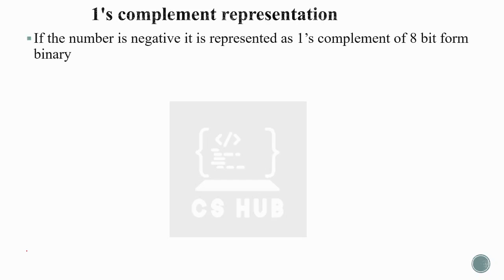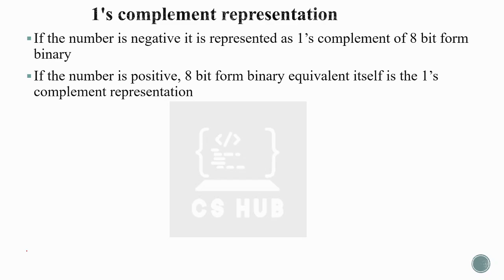If the number is negative, it is represented as the one's complement of its 8-bit binary form — that is, the 8-bit binary is inverted. If the number is positive, the 8-bit binary equivalent itself is the one's complement representation; there is no need to invert the bits. Just convert the number to its 8-bit binary equivalent.